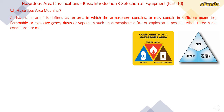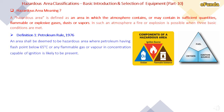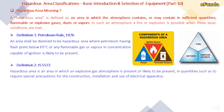Moving to the definitions of hazardous area. Definition 1 — Petroleum Rule 1976: an area shall be deemed hazardous where petroleum having a flash point below 65°C or any flammable gas or vapour in a concentration capable of ignition is likely to be present. Definition 2 — IS 5572: a hazardous area is an area in which an explosive gas atmosphere is present or likely to be present in quantities requiring special precautions for construction, installation and use of electrical apparatus.